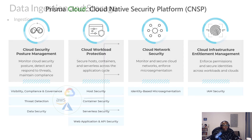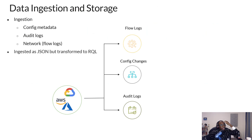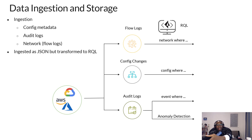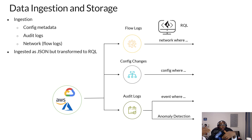Prisma Cloud can ingest your configuration data in Azure, audit logs, and network flow logs, allowing you to ask any question about your Azure environment. It also has built-in machine learning algorithms that identify anomalies — some of the activities I demonstrated would have been flagged by Prisma Cloud as abnormal commands.